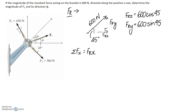We're working with three forces: F1, F2, and F3. Let's start with the ones we know fully. For F3, its x component is the adjacent side to the 45 degree angle, so it's 500 cos 45. It's pointing in the positive x direction, so it goes into the equation as positive.